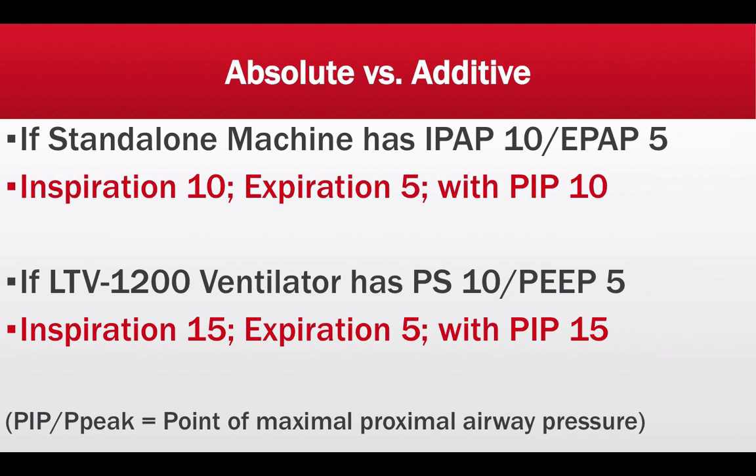PIP and PP are abbreviations that stand for peak inspiratory pressures. The meaning is point of maximal proximal airway pressure — specifically, the pressure in the circuit to the proximal airway during the peak moment of inhalation.